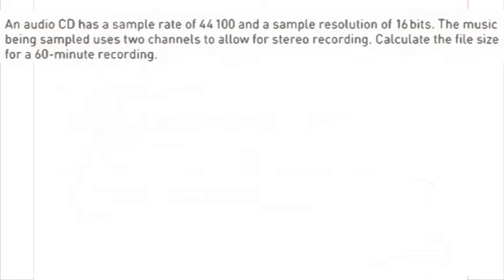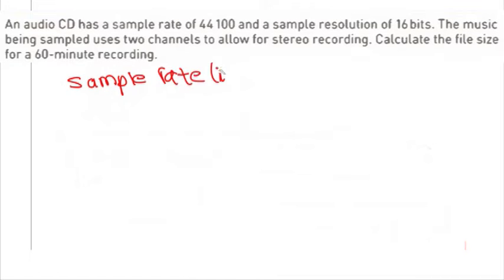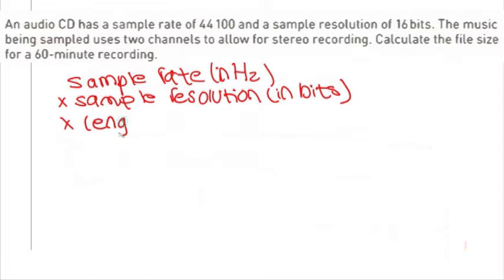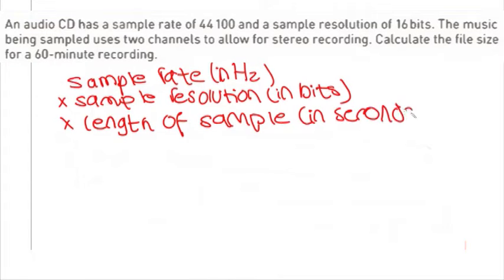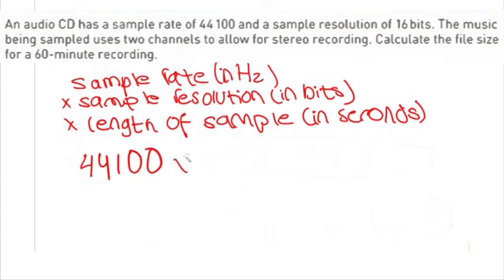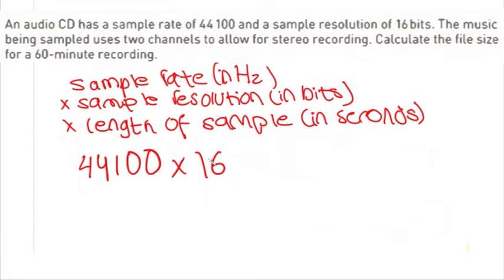Now, this is another example. It says an audio CD has a sample rate of 44100 and a sample resolution of 16 bits. The music being sampled uses two channels to allow for stereo recording. Calculate the file size for a 60-minute recording. We know the formula for calculating the size of a mono sound file is sample rate in hertz multiplied by sample resolution in bits multiplied by the length of sample in seconds. In the question, 44100 is the sample rate in hertz. We multiply that by the sample resolution, which is 16 bits, and then we multiply the length of sample.